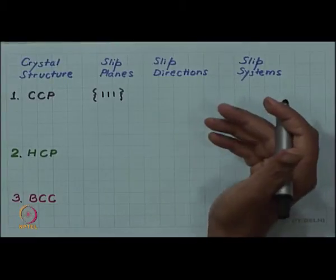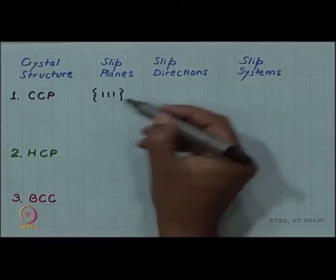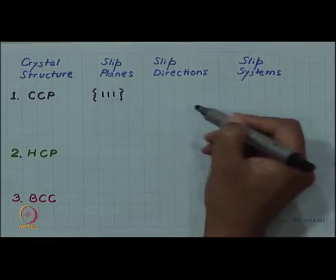You will need to review some of your crystallography videos which we have seen, we have discussed these things. So close-packed planes in CCP are of the {111} type.